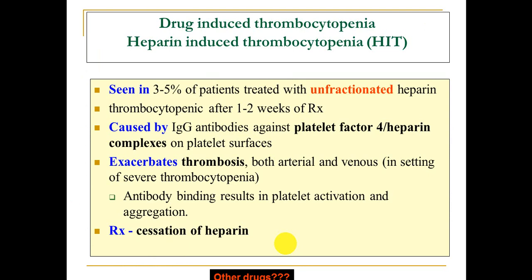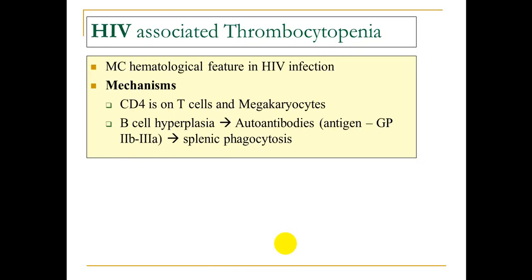Regarding heparin-induced thrombocytopenia (HIT), it could be early (within five days) or late (after seven days), so we need a daily platelet count for patients taking heparin. The treatment is of course to stop heparin and replace it with another anticoagulant drug. Regarding HIV, platelets and megakaryocytes carry CD4 receptors, making them targets for HIV.